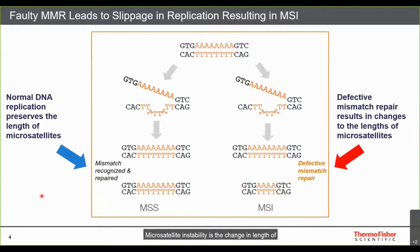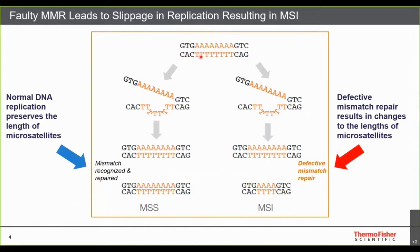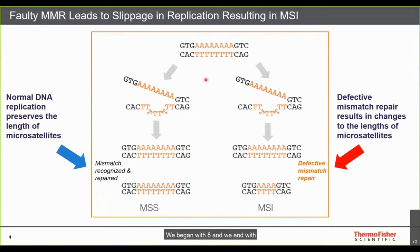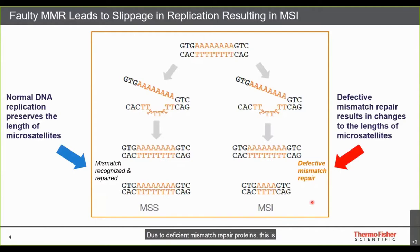Microsatellite instability is the change in length of small repeat units in the genome. In a functional system, mismatch repair proteins identify polymerase slippage during DNA replication and correct the number of repeat units — beginning with eight and ending with eight, considered microsatellite stable. However, when replication slippage changes repeat units from eight to four and the error is missed due to deficient mismatch repair proteins, this is called microsatellite instability.